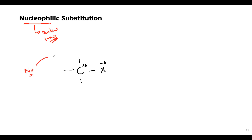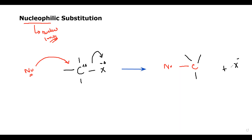The nucleophile is attracted towards the electron-deficient or positive centre. It will form a bond with the carbon while the halogen alkane acts as the leaving group — one side the nucleophile is added, and the halogen leaves the carbon. We call it substitution because one atom or group of atoms is displaced by another group.